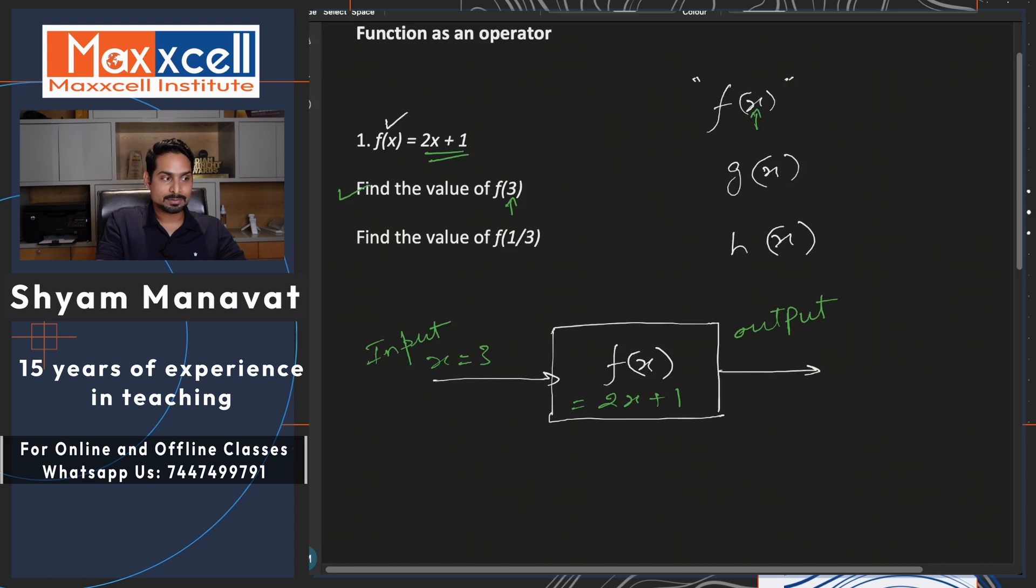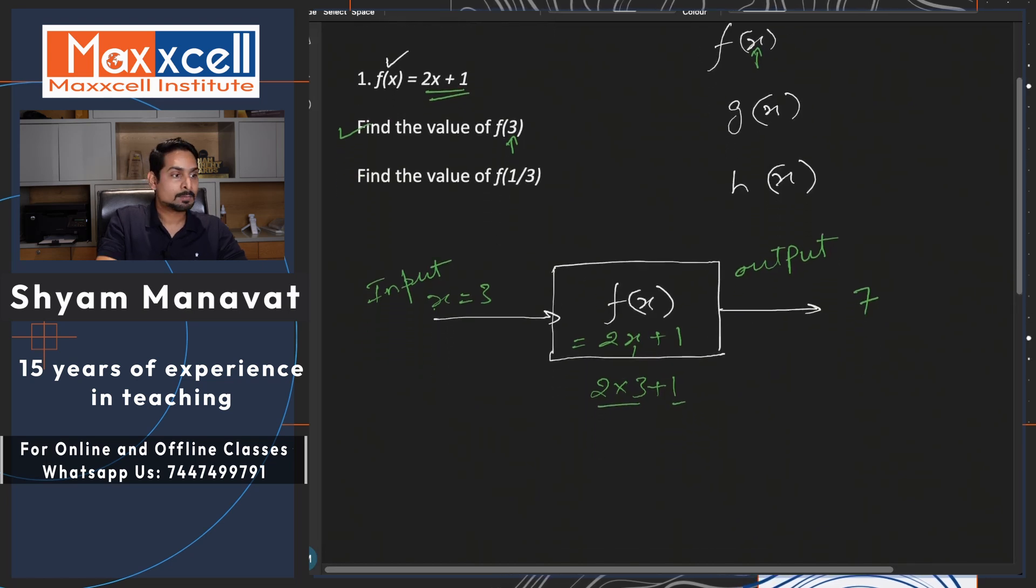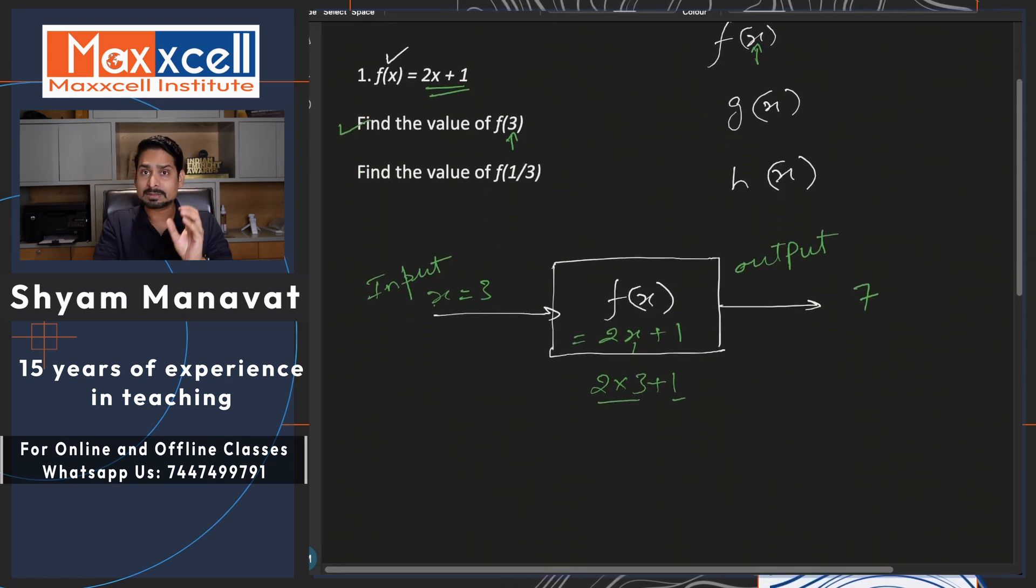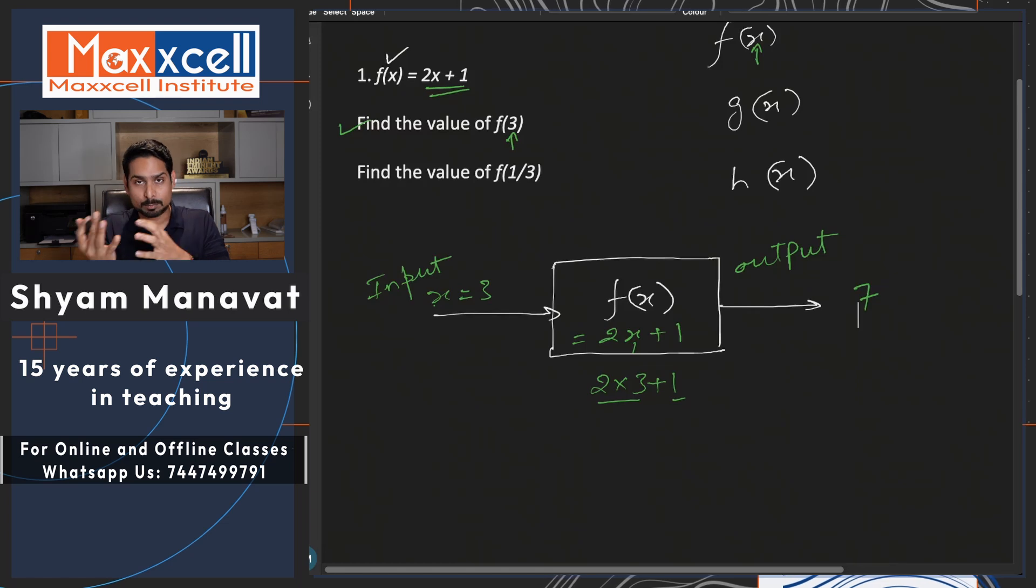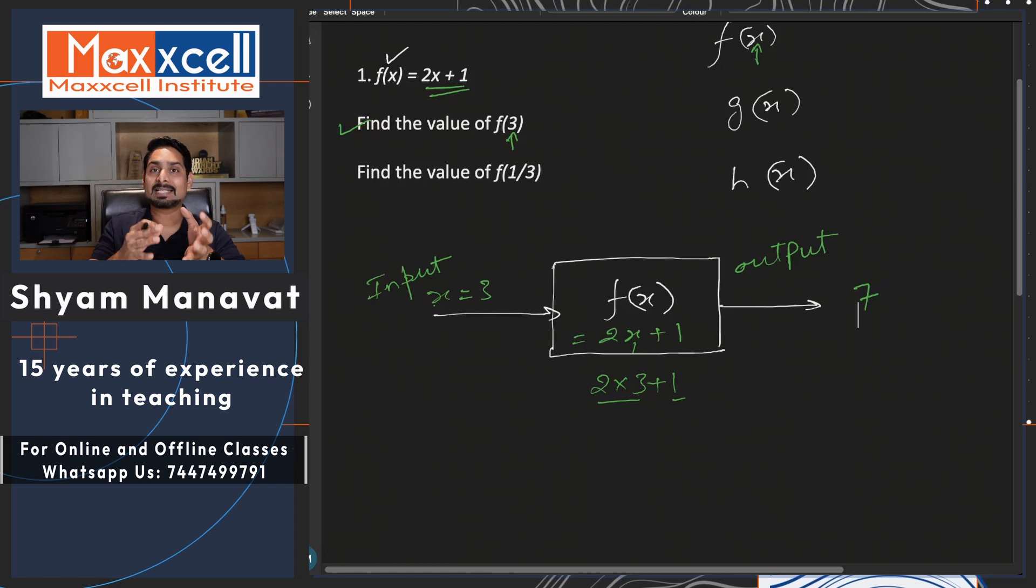Now if you substitute x is equal to 3, you will have 2 into 3 plus 1. What is 2 into 3 plus 1? 7, right. What is the output? 7. Are you understanding this? So function works like an input-output machine where the input is the value of variable which you substitute and the output is the value of function, the entire function.